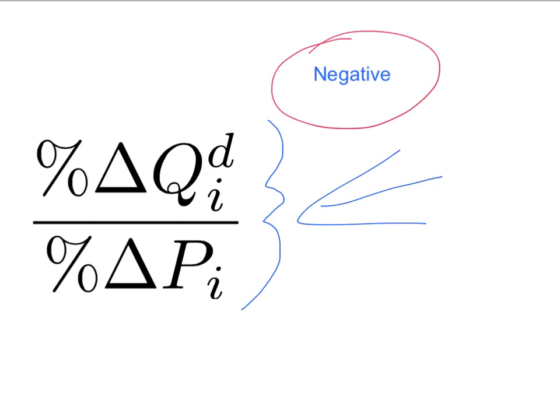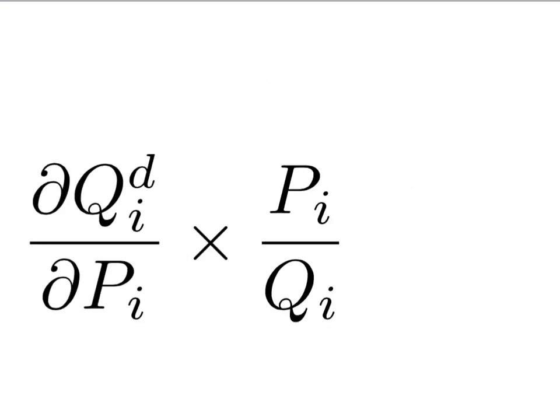However, economists often leave the negative sign off and just simply refer to own price elasticities of demand as positive numbers. And just a final reminder from last time: on this slide we have the exact formula for the own price elasticity of demand for any point on our demand curve. Remember, the percentage change in quantity divided by the percentage change in price is going to be an approximation whenever we work with real-world data.